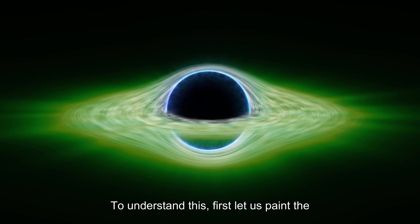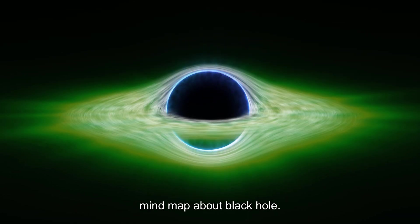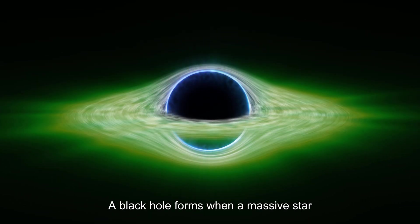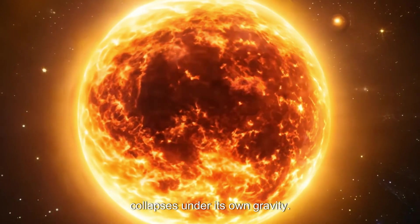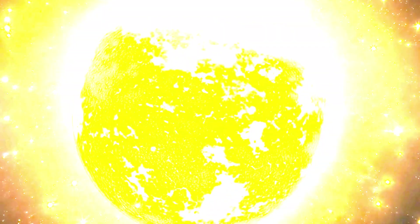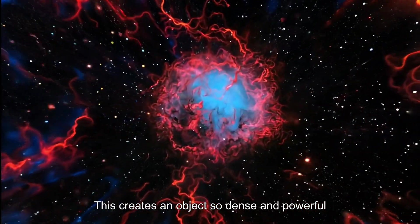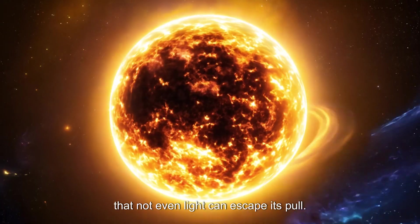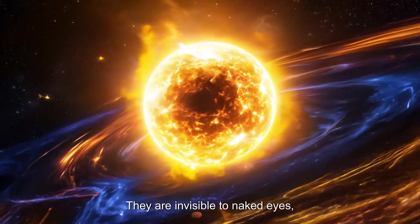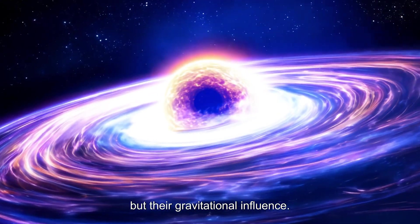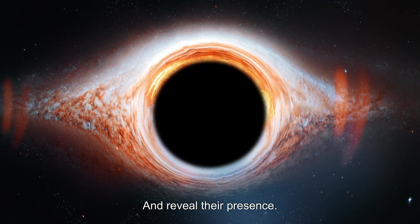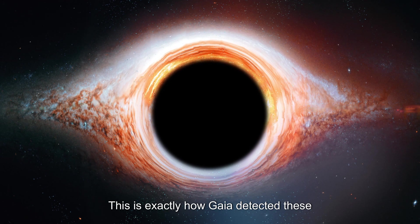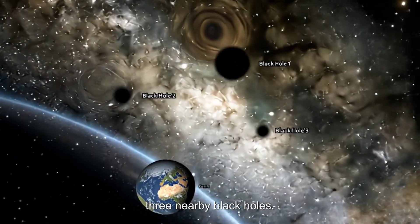To understand this, first let us paint the mind map about black holes. A black hole forms when a massive star collapses under its own gravity. This creates an object so dense and powerful that not even light can escape its pull. They are invisible to the naked eye, but their gravitational influence can reveal their presence. This is exactly how Gaia detected these three nearby black holes.